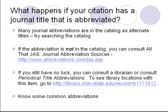If the abbreviation is not in the catalog, you can consult a resource called All That Jazz or Journal Abbreviation Sources, which is available online. If you still have no luck, you can consult a librarian or consult a volume of a book called Periodical Title Abbreviations. You can check online to see what library locations at OSU have this item.